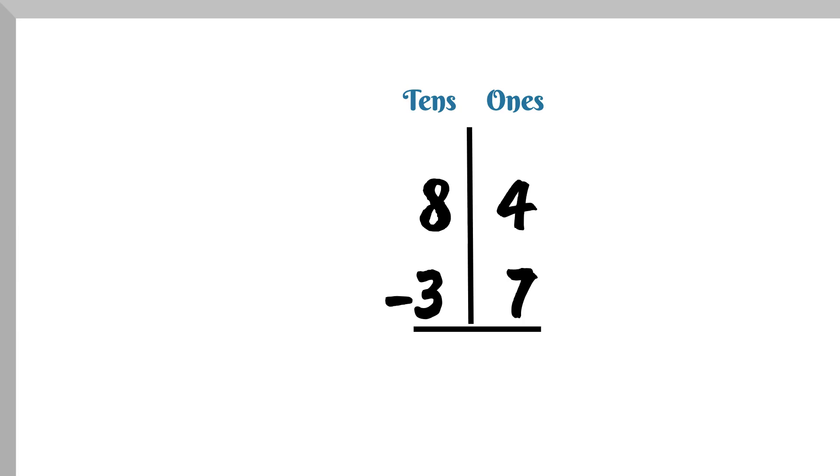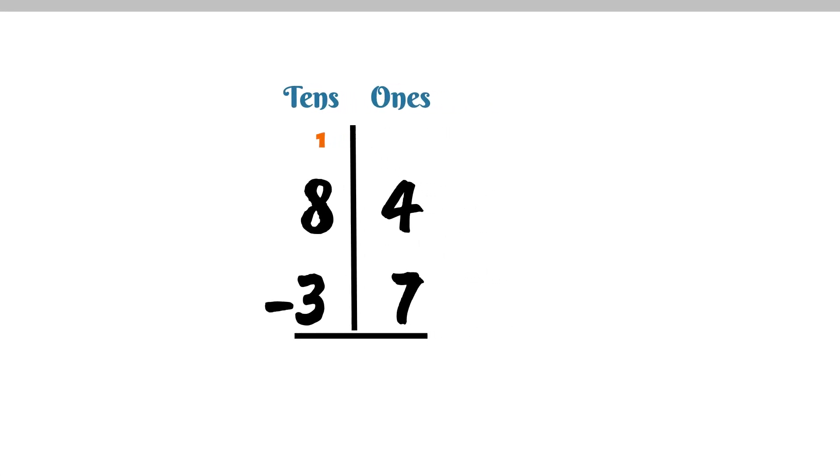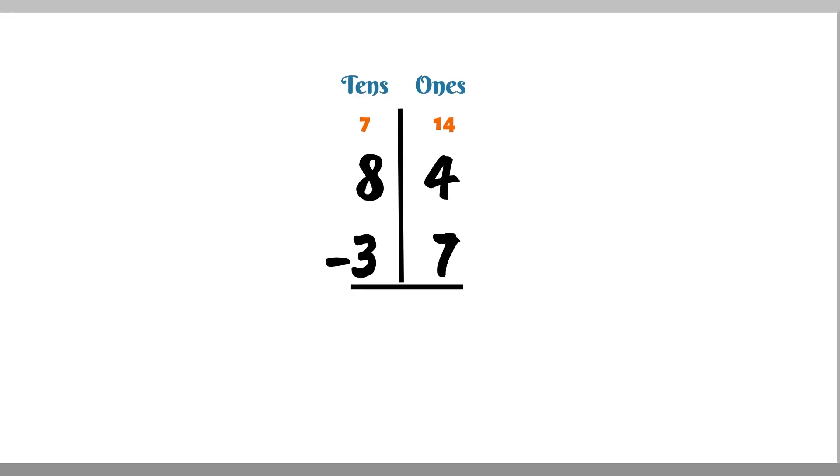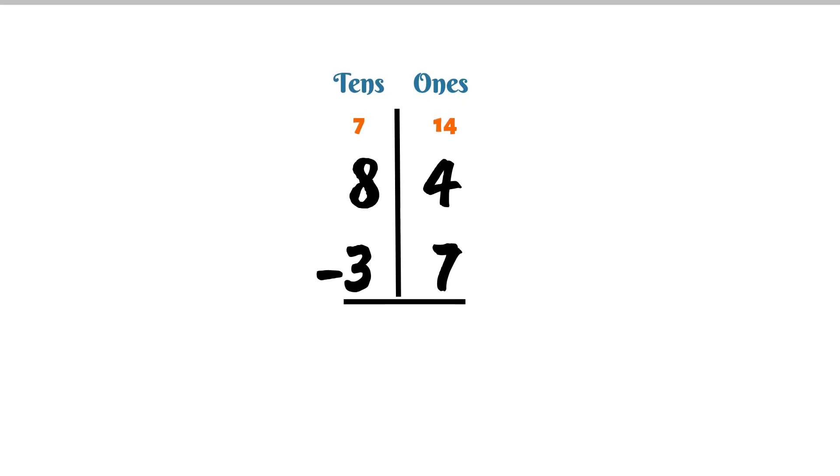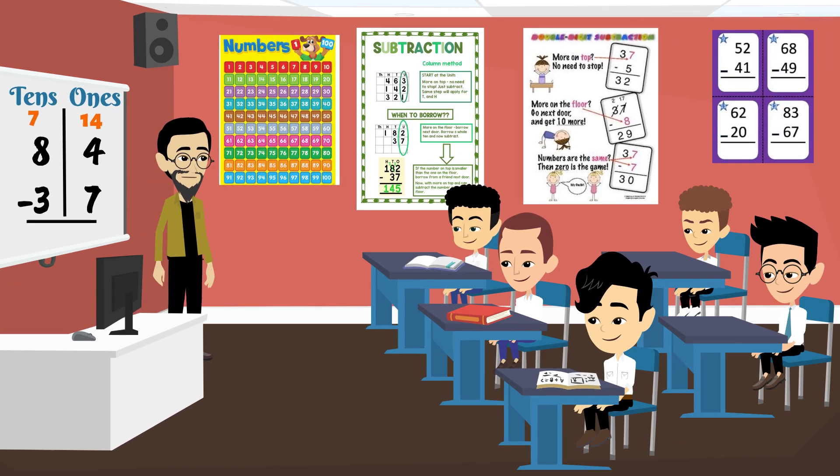That's right. So, let's borrow from the 8 in the 10's place. What does that make the 8? It becomes 7. Exactly. And what do we add to the 4 in the one's place? We add 10. So, it becomes 14. Great.